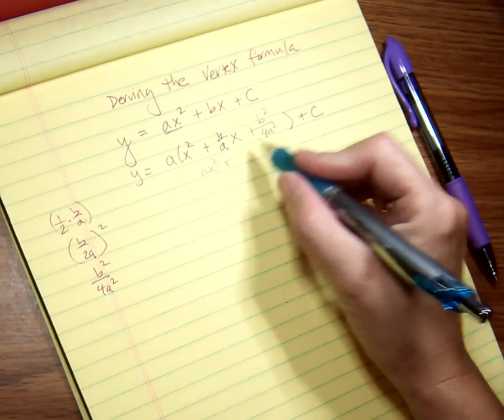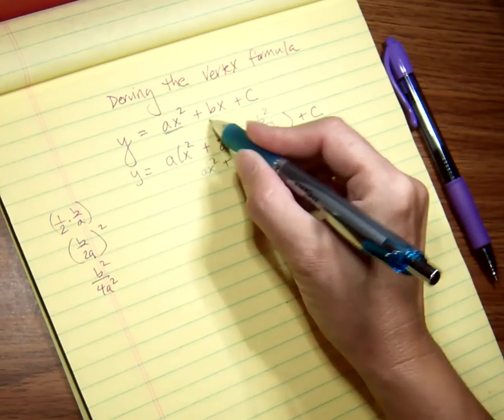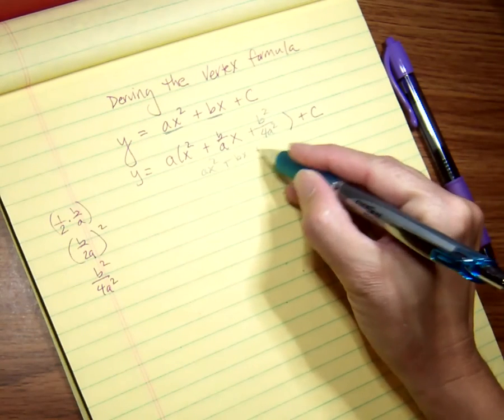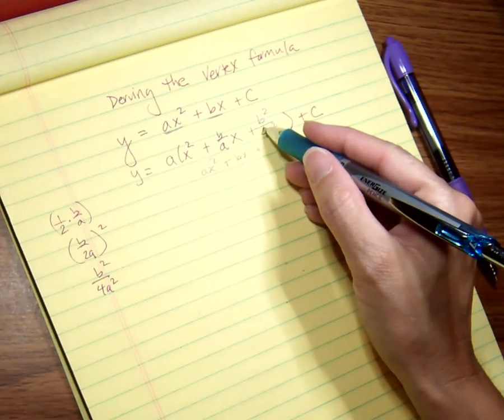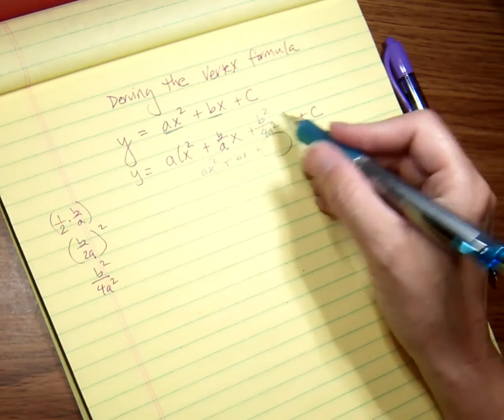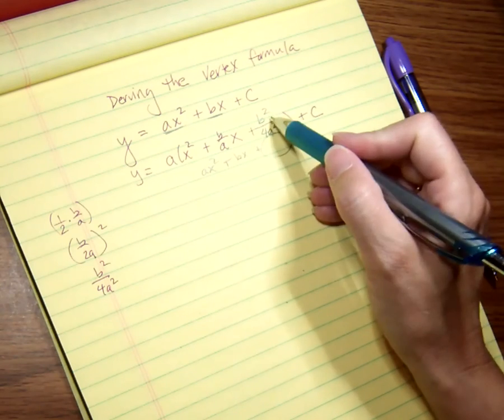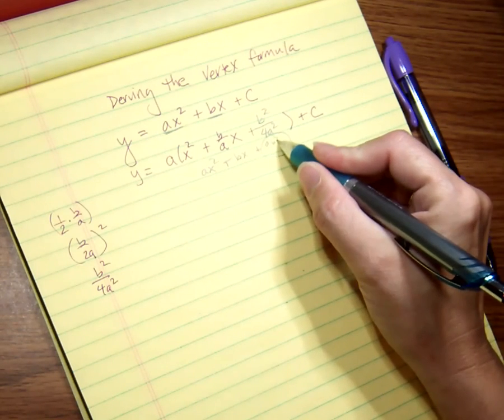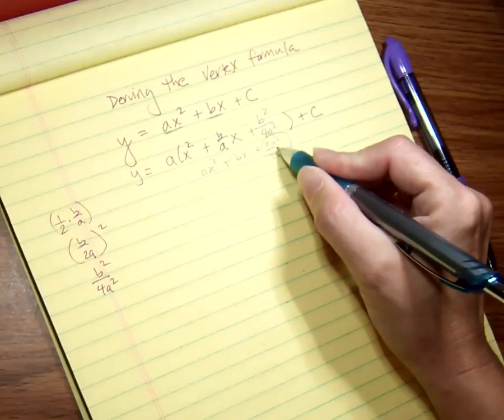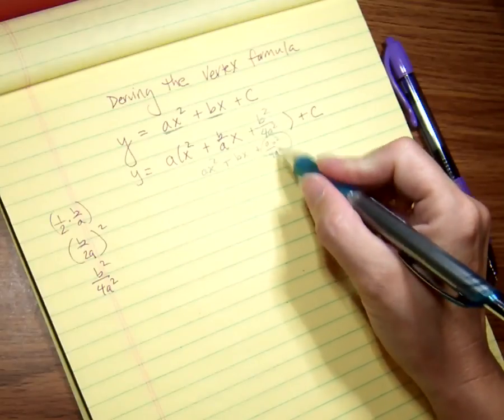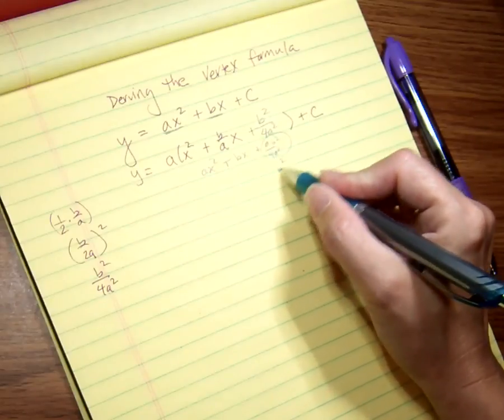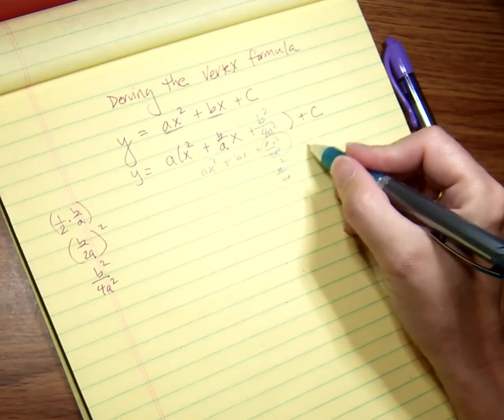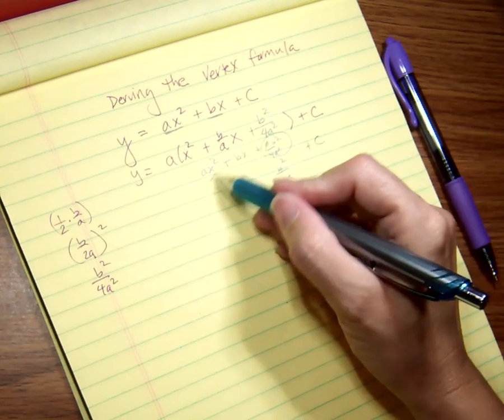However, I really didn't add B²/4A². If I were to distribute this—I'll just do it small right here—ax², that's what I have. And if I distribute to the next term, I would get bx, so I already have that. The new part is right here that I'm about to distribute.